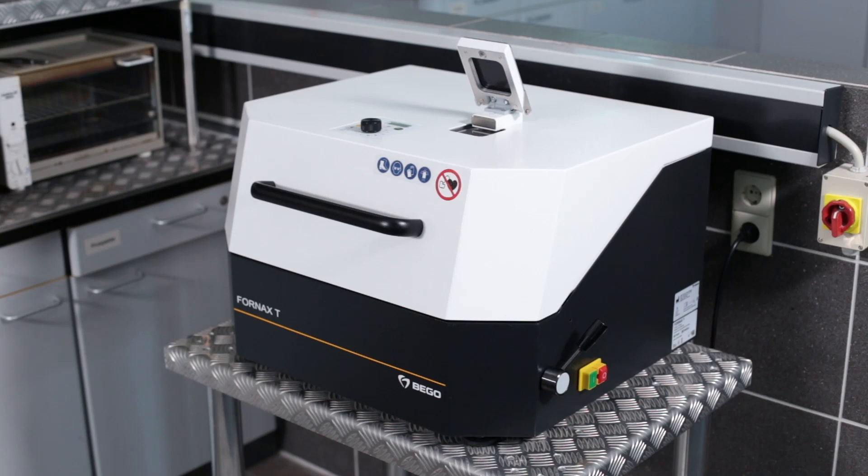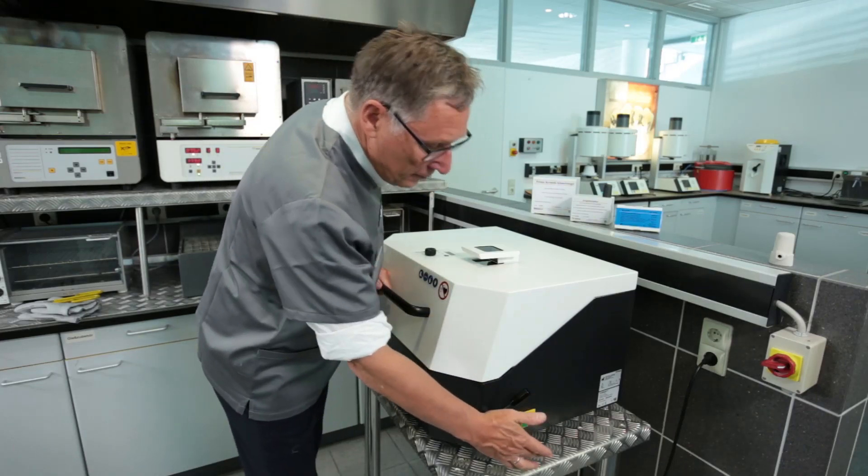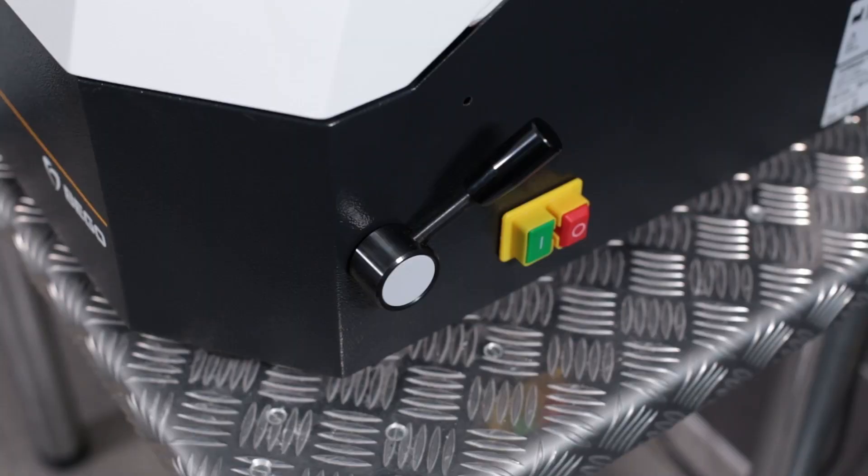First, switch on the Fornax T by pressing the green main switch on the right side of the machine. After a few moments, a sound indicates that the internal cooling system has been activated.